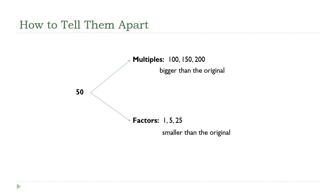We always get factors by dividing into the original number, so factors are always going to be smaller than the original value.